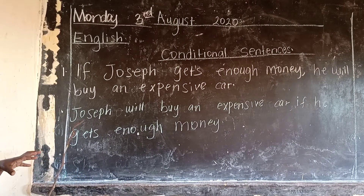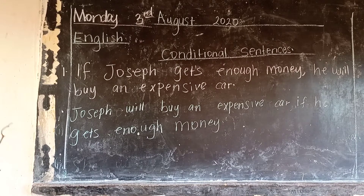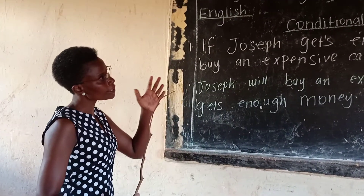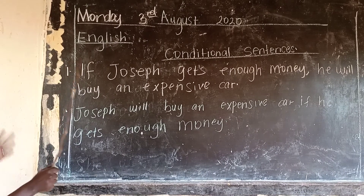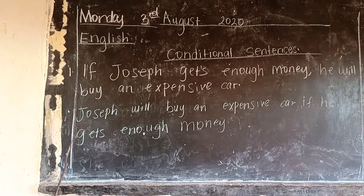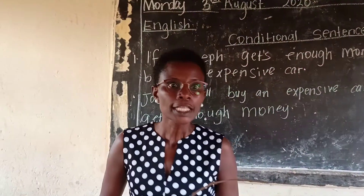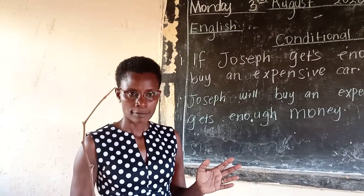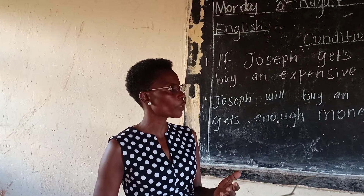Let's see sentence number two and see the difference: 'Joseph will buy an expensive car if he gets enough money.' There is no comma in sentence two simply because 'if' was used in the middle of the sentence. Another example: 'Joseph will perform if he works hard' — no comma. But if I begin with 'if': 'If Joseph works hard, he will perform.'